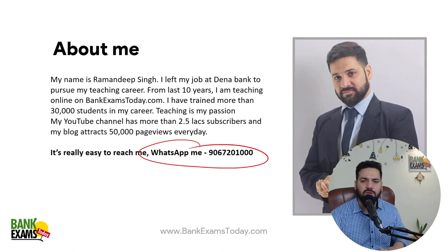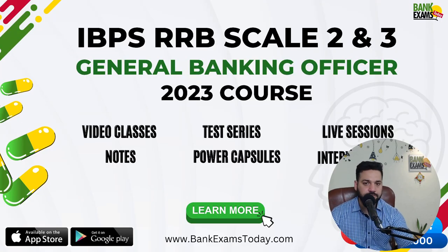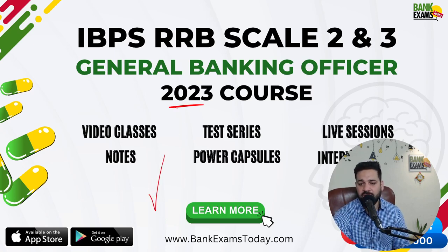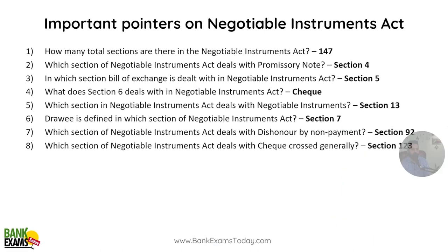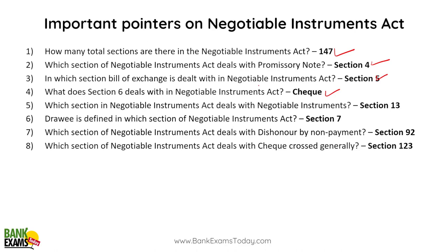For IBPS RRB Scale 2 and Scale 3 course for 2023, the link is available in the description. First, important pointers: the Negotiable Instruments Act has a total of 147 sections. Section 4 deals with promissory note, Section 5 with bills of exchange, and Section 6 with cheques. These section numbers are essential to remember.